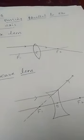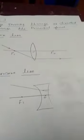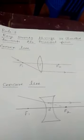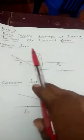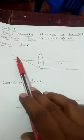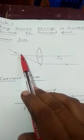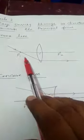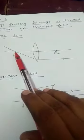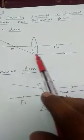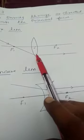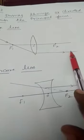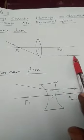Rule 3: when a ray passes through or is directed towards the principal focus. For a convex lens, when the ray passes through the principal focus and strikes the convex lens, the refracted ray will be parallel to the principal axis.